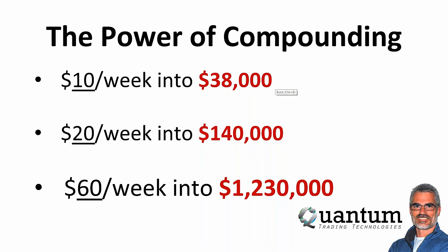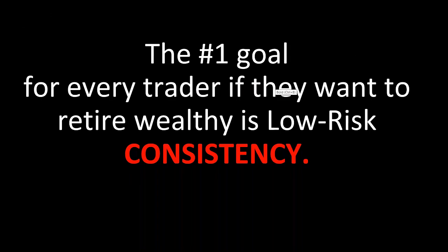If you can figure out how to average $60 a week — just $12 a day — and compound that in a lower-risk strategy, it turns into $1.2 million. And if you only average $20 a week and go for ten years instead of five years, you're still looking at over a million dollars compounded.